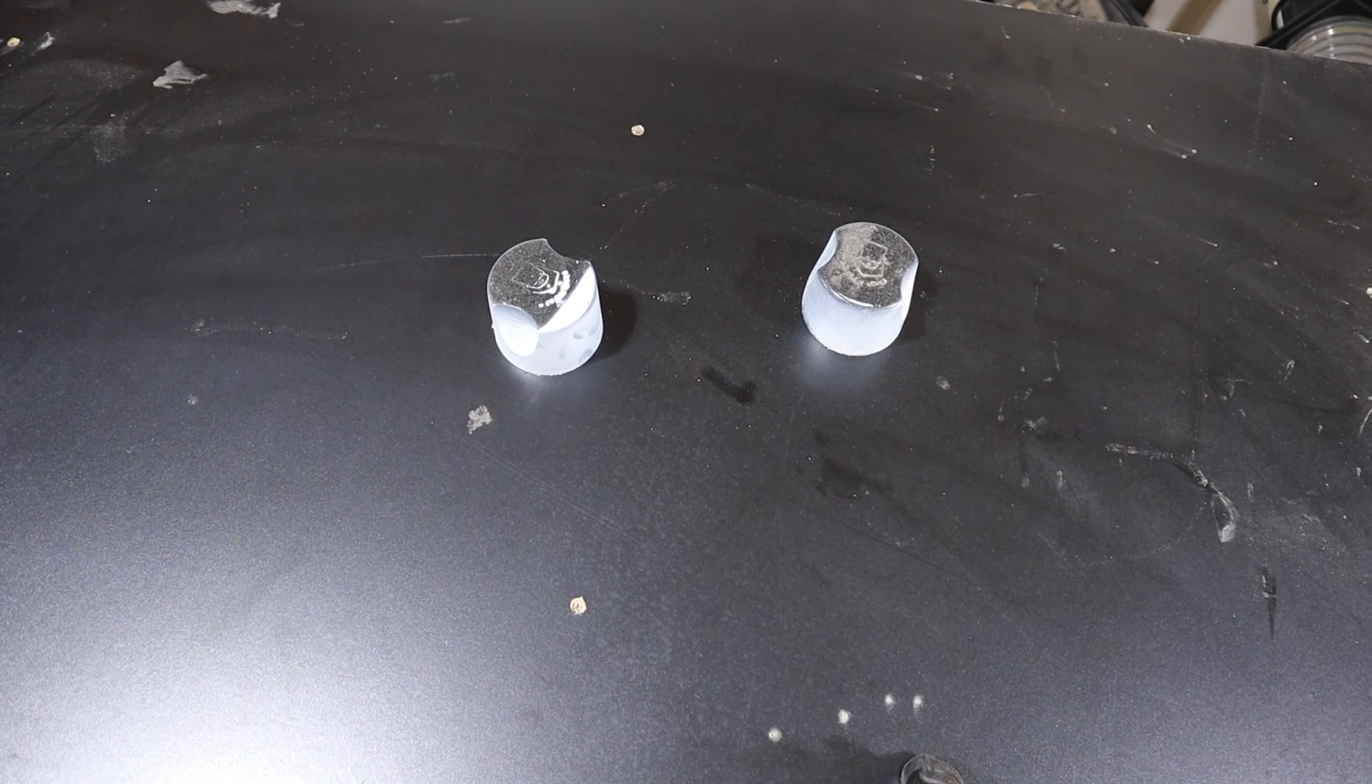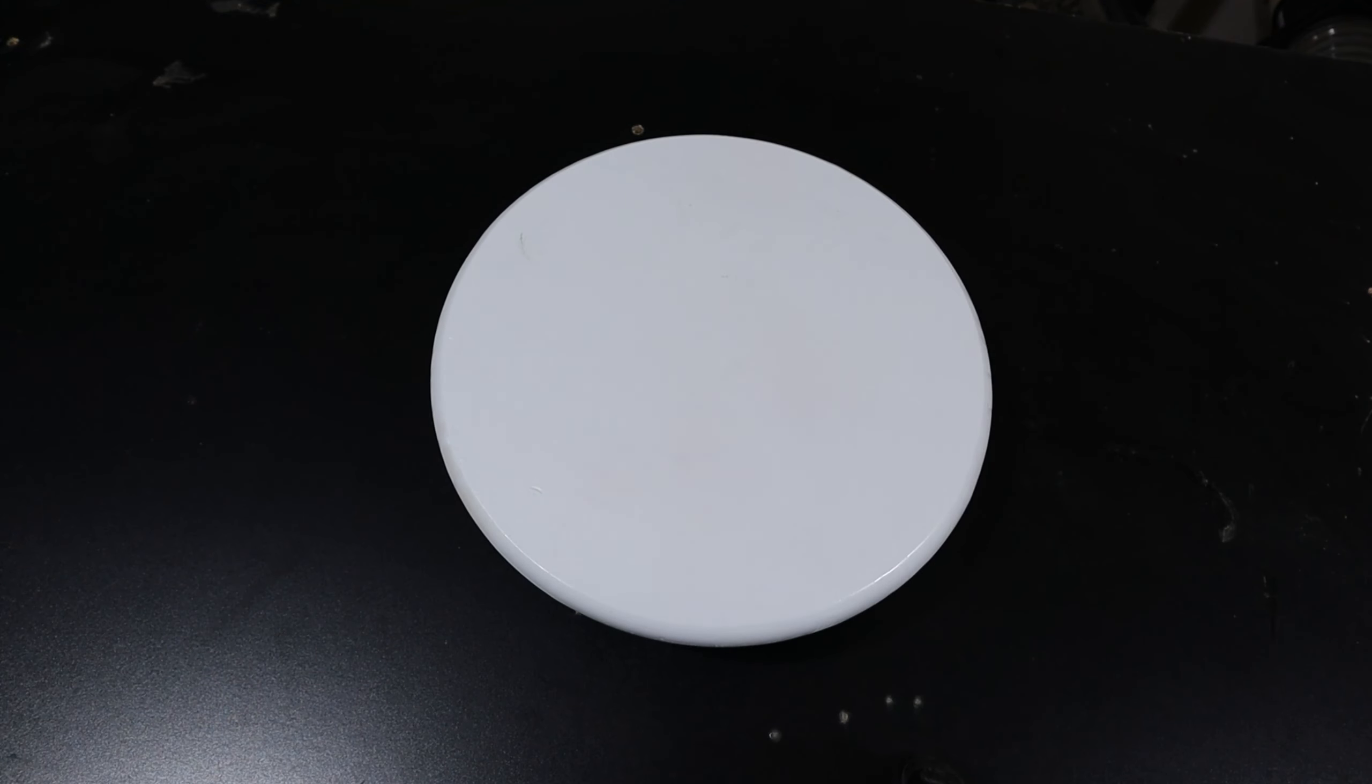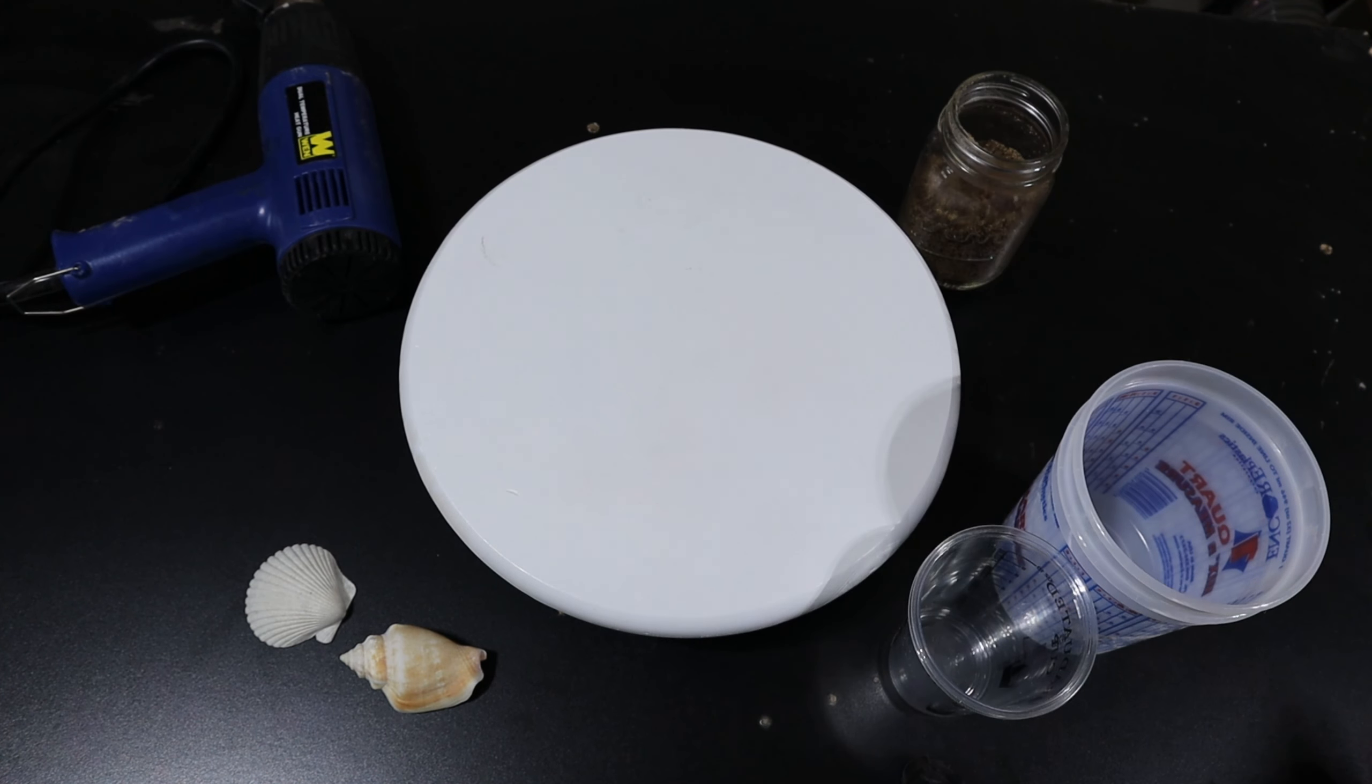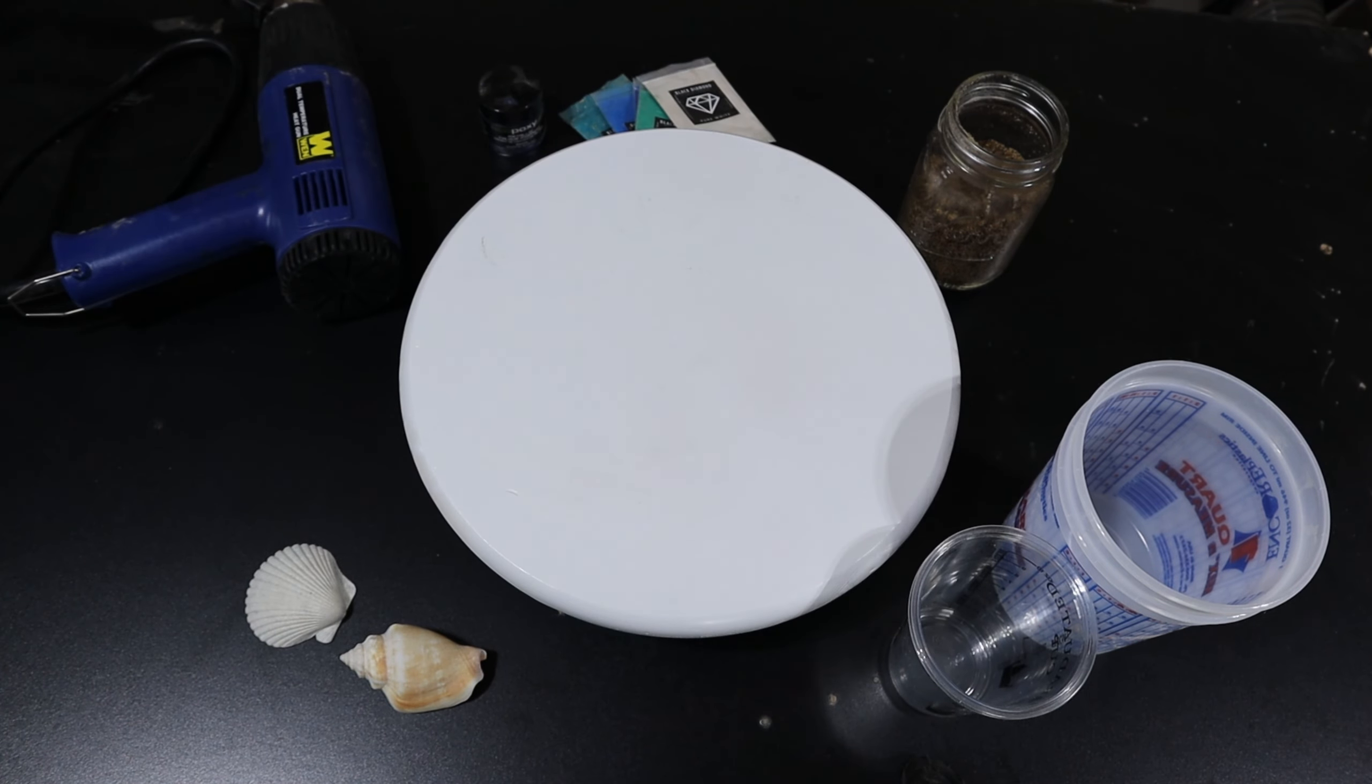To get started you'll need a few different materials. You'll need some sort of a canvas, I used a 12 inch piece of pine painted white, some shells, some sand, some measuring cups, a heat gun, and of course the pigment and the epoxy.